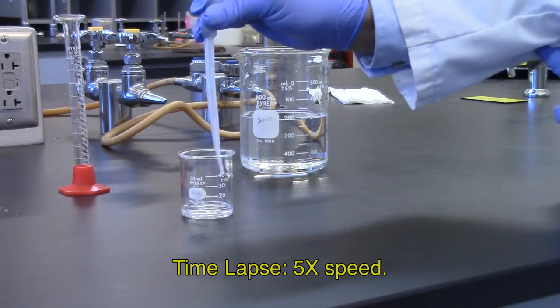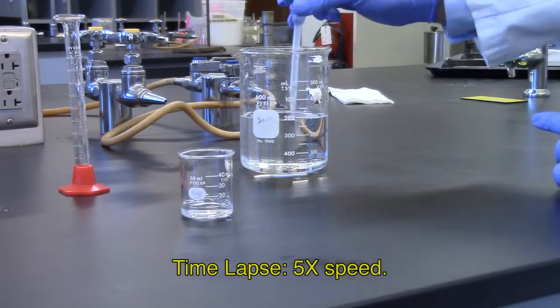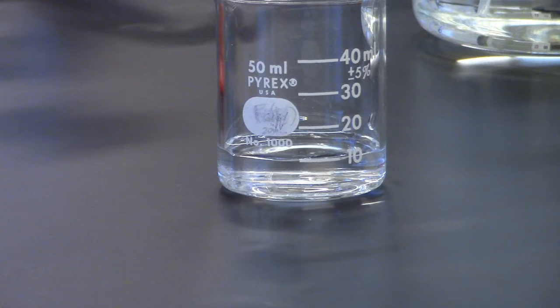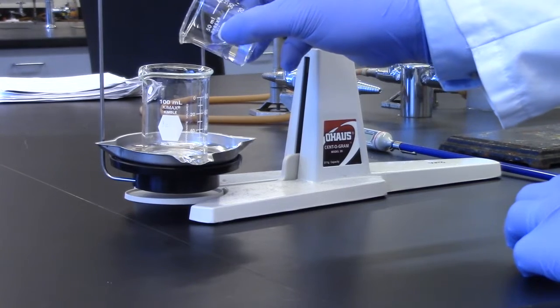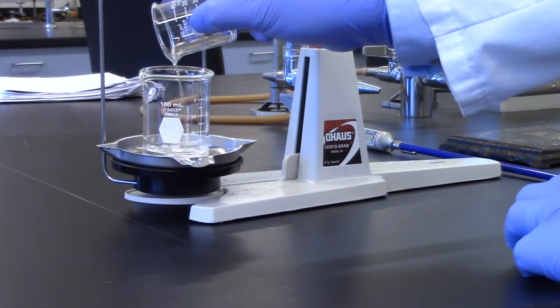Start with the 50 milliliter beaker, pour distilled water to the 10 milliliter mark. Transfer water to 100 milliliter beaker and weigh on the balance.